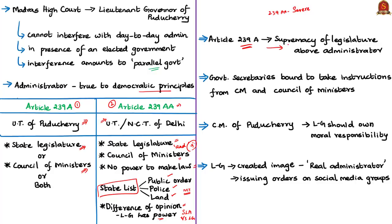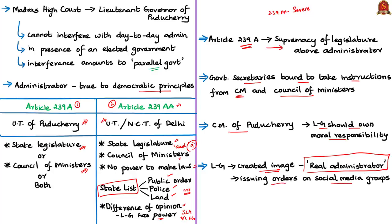The court ruled that Article 239AA imposes several restrictions on Delhi's legislature, but no such restrictions were explicitly imposed on Puducherry under Article 239A. For Puducherry, this signifies the supremacy of the legislature over the administrator — the elected government is above the Lieutenant Governor. The judgment said government secretaries are bound to take instructions from ministers and the council of ministers headed by the Chief Minister. Chief Minister V. Narayanasamy responded that LG Kiran Bedi should own moral responsibility for stalling development and welfare schemes. The LG was blamed for creating an impression among government employees that she was the real administrator, compelling employees to take orders from her. The judge also disapproved of the practice of government officials being part of social media groups through which the LG issued instructions.